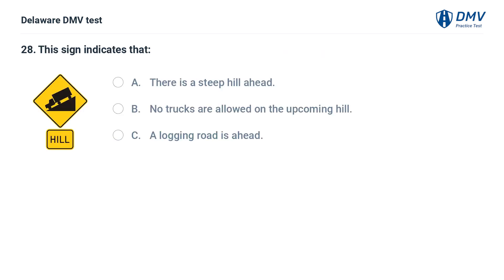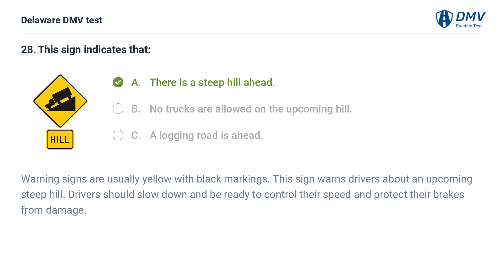This sign indicates that: A. There is a steep hill ahead. B. No trucks are allowed on the upcoming hill. C. A logging road is ahead. Answer: A. There is a steep hill ahead. Warning signs are usually yellow with black markings. This sign warns drivers about an upcoming steep hill. Drivers should slow down and be ready to control their speed and protect their brakes from damage.